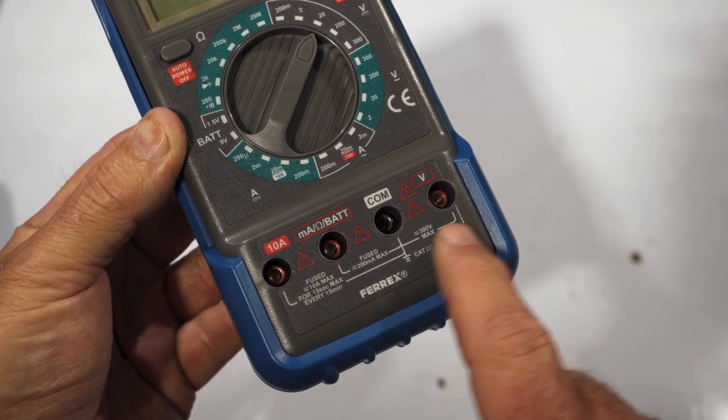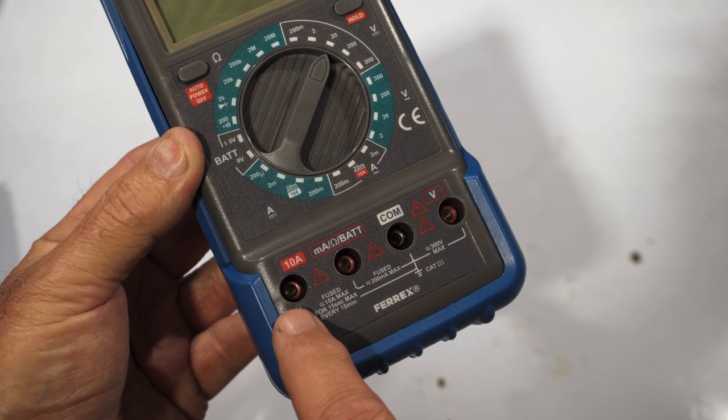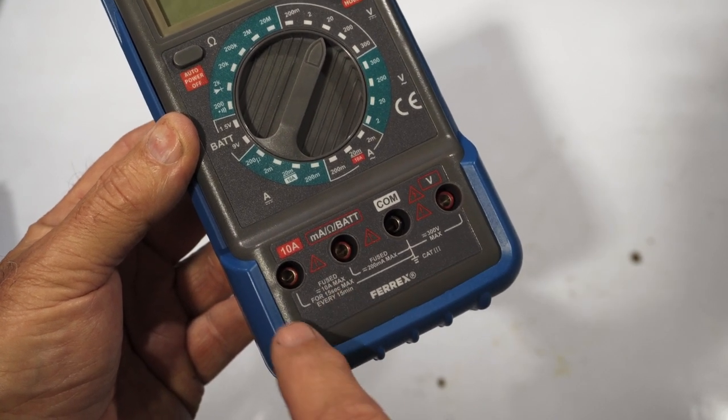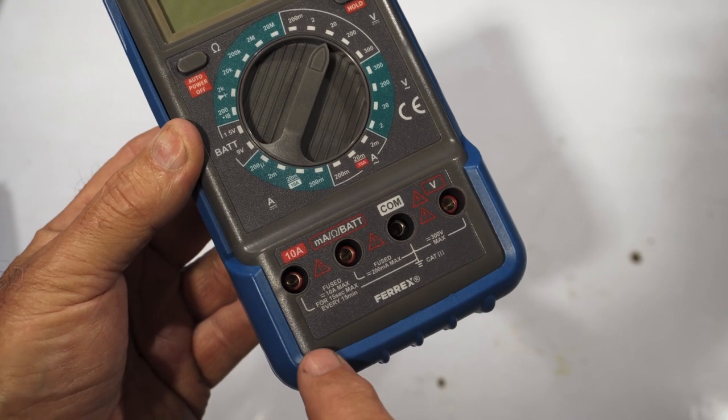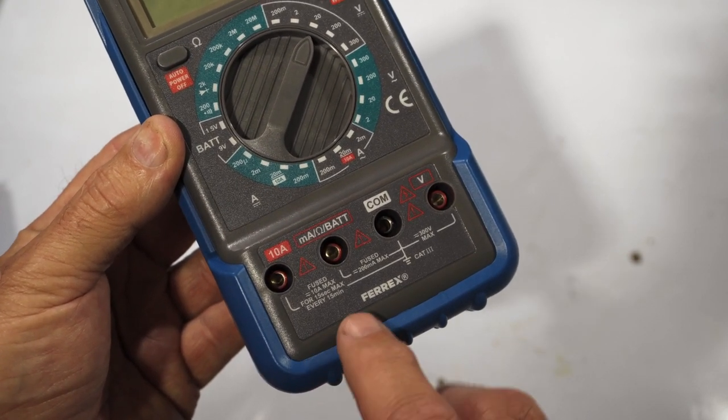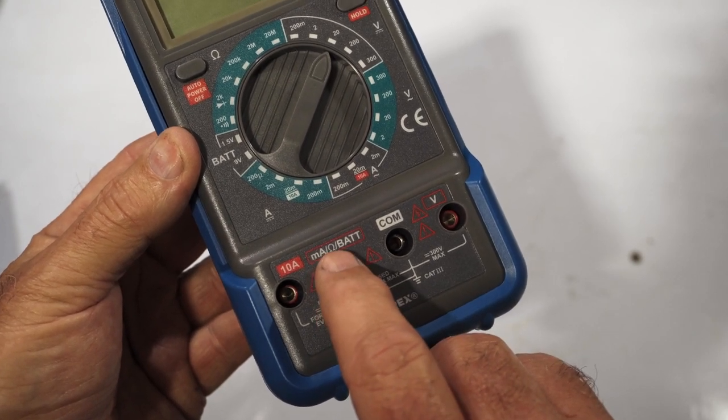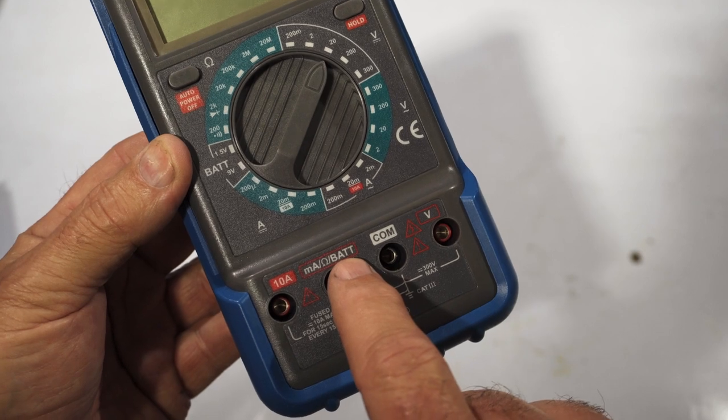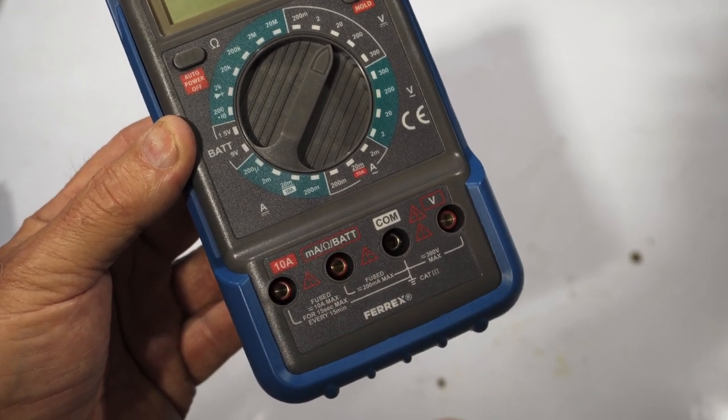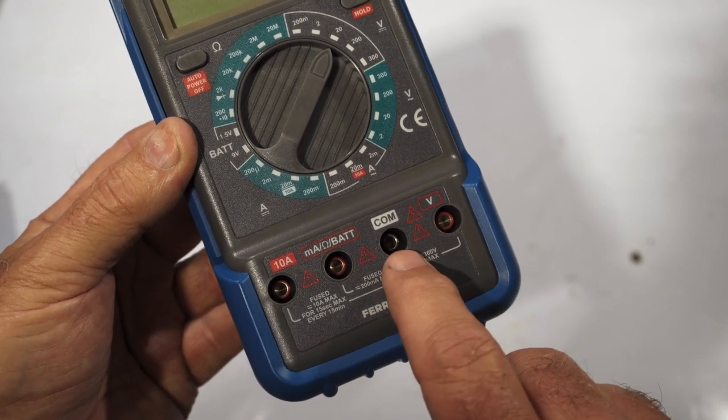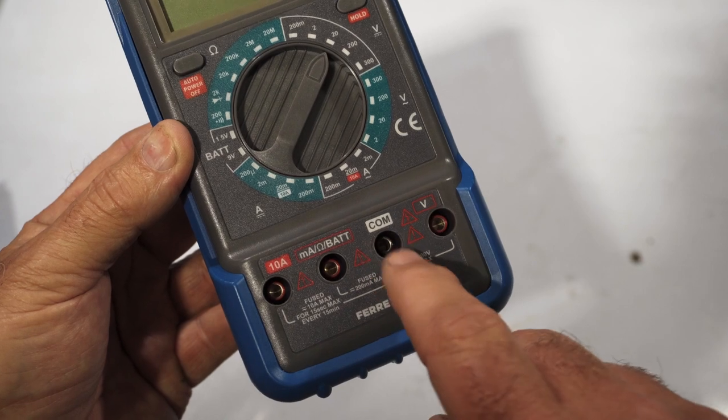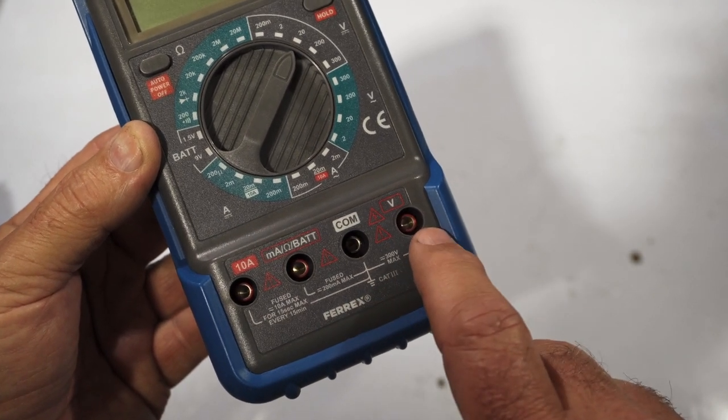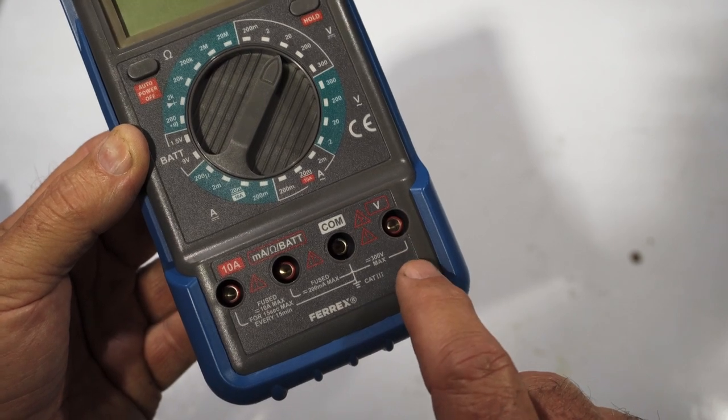So these are connections for the probes here on the left hand side. This one is used to check current up to a maximum of 10 amps. And you can see underneath here it says fused 10 amp maximum. If you did happen to blow the fuse on this, we've seen on the inside there that you can easily change that out and put a new fuse in. The next one along is used to check milliamp current resistance and battery level using this setting here. The battery level is really just the internal 9 volt battery level to see how much or how good the battery is in the actual meter. The third one here is com or common. So this is a common ground connection port. This is usually what the black probe connects to. And the one on the right hand side here is the red voltage connector, which you use to check the voltage.